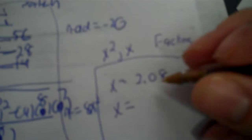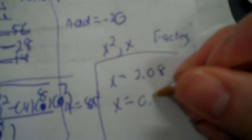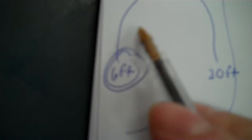Then 20 minus 13.27, divide by 16, equals 0.42. Now, since these are both positives, put them both. That means it's 0.42 seconds on the way up to get to 20 feet, and on the way down it would be 2.08 seconds.